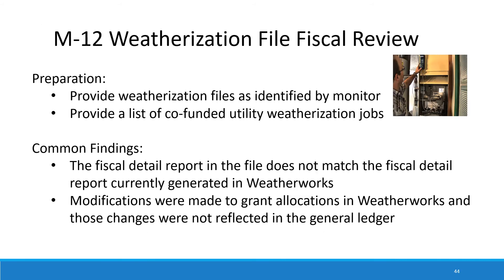Moving on, we'd like to talk about the weatherization file fiscal review. Your fiscal monitor is going to select a certain number of weatherization files, and we ask that you provide those files and also a list of co-funded utility weatherization jobs for the year being monitored. Things that we find are that the fiscal detail report in the file does not match the fiscal detail report currently generated in WeatherWorks — we receive the files from you and run a current fiscal detail report out of WeatherWorks, and if those allocations are different, there might be a problem. We also find that modifications were made to grant allocations in WeatherWorks that were not reflected in your general ledger.